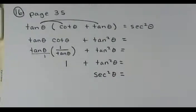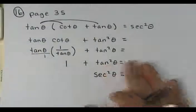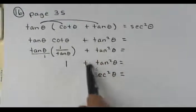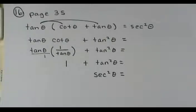We didn't move anything across the equal sign, didn't add or subtract anything — we manipulated one side to equal the other. This is called verifying identities. Most students hate this, but I love it. These are really fun — they're like doing a puzzle. If you like analytical thinking, these will make you think.